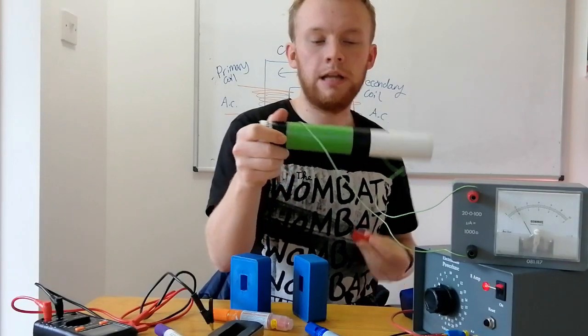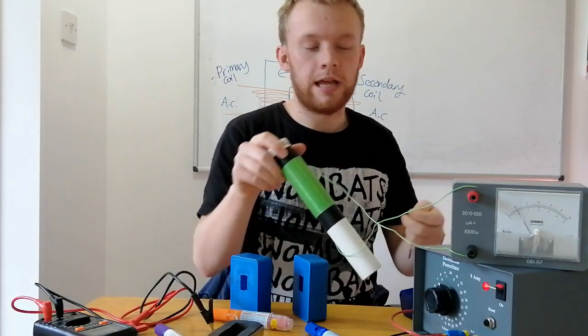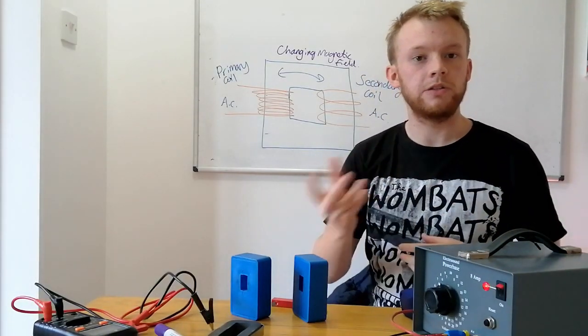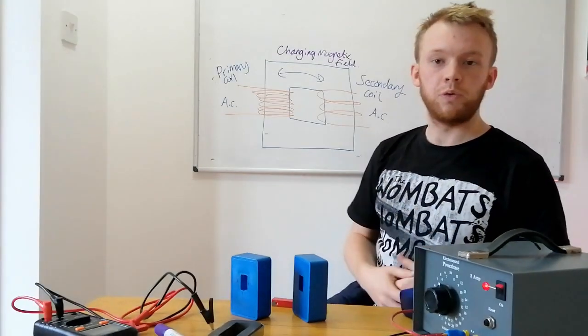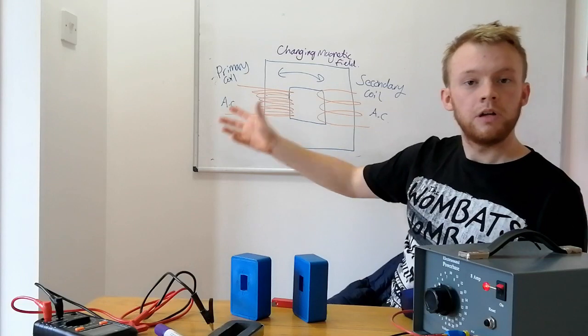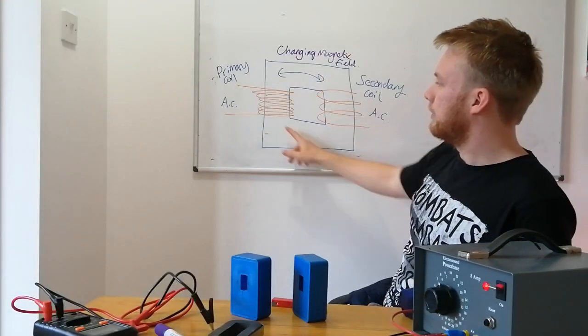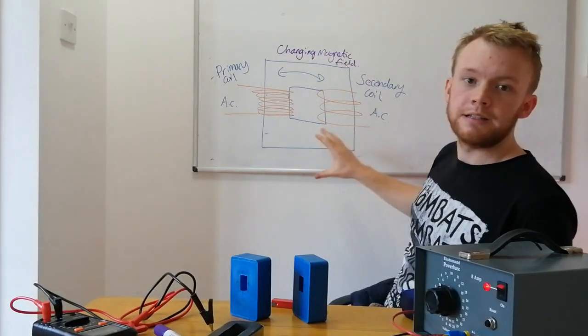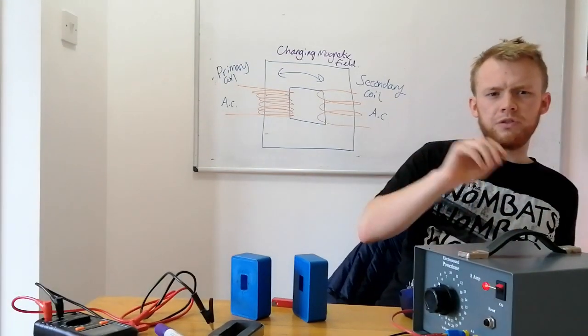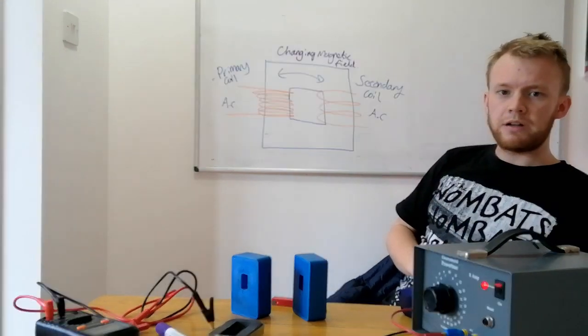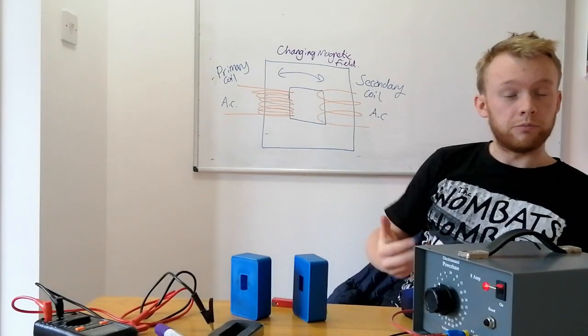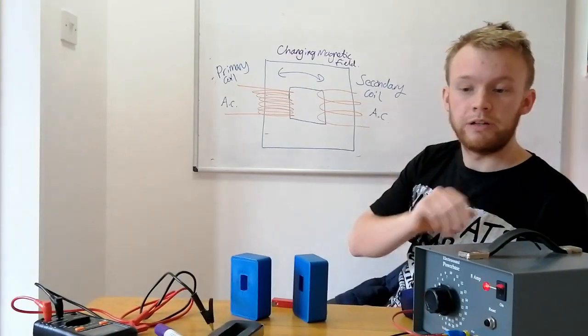So relative motion between a coil of wire and a magnet will induce a current within the wire. Now this very principle is used in transformers to change the voltage in the national grid. We take a primary coil with an alternating current. This changing current will produce a changing magnetic field within the iron core. Now if we've got a changing magnetic field within the iron core, then that produces another changing current in the secondary coil. Now we need this to be alternating current. If it was just direct current, there wouldn't be a changing magnetic field, so we couldn't produce that secondary voltage or any current going through the secondary coil.